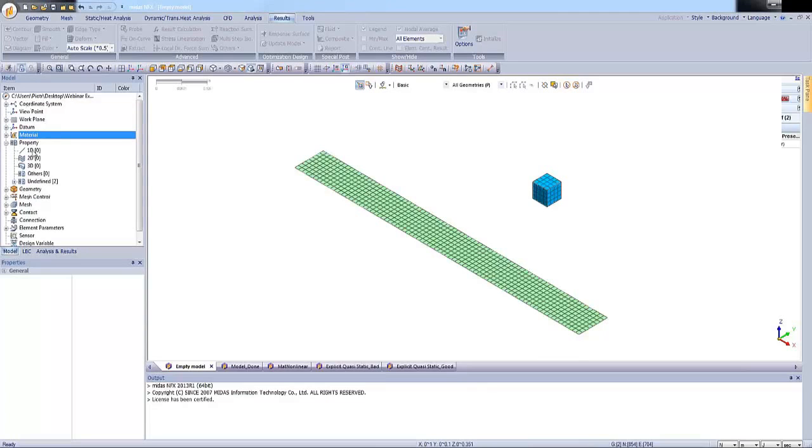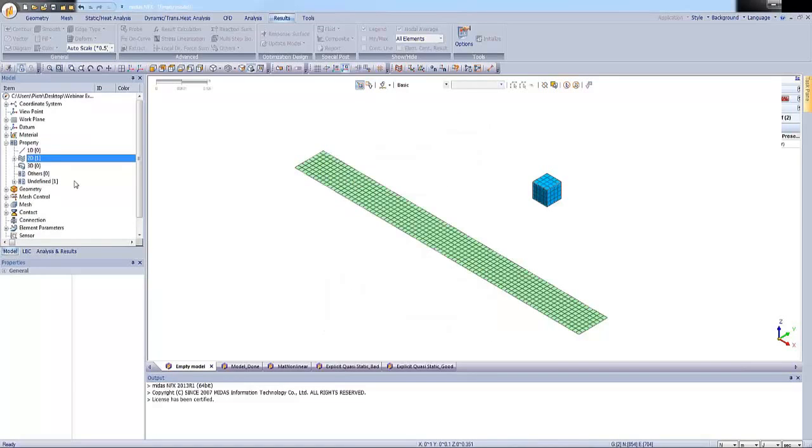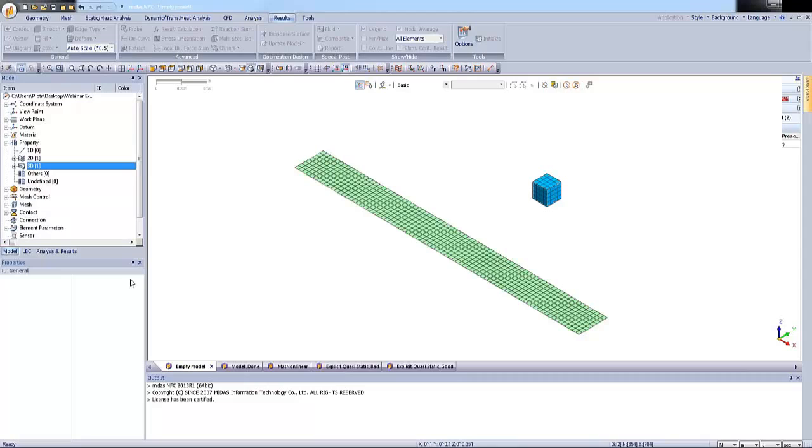So the second step is the assignment of the property. So I will create two properties. First one related to the 2D elements. So I will choose the material and we have to specify the thickness. So this time it will be 2 mm. Okay. And let's create the property for the block.